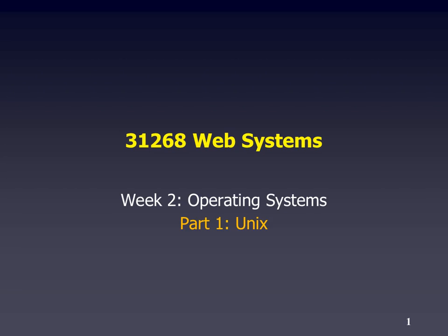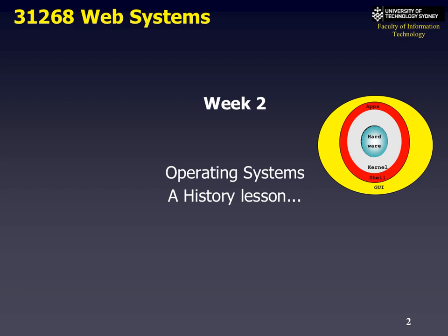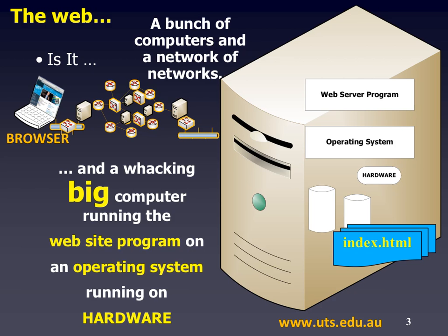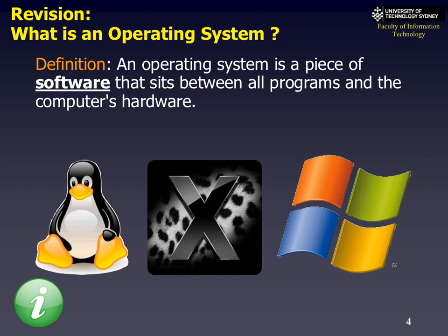Welcome to Web Systems. Today we're going to cover a bit of history about Unix. We know that the Web is a gigantic network of computers—networks of networks, routers, switches, devices, and applications. A lot of these systems tend to run an operating system called Unix, or Linux in our case.